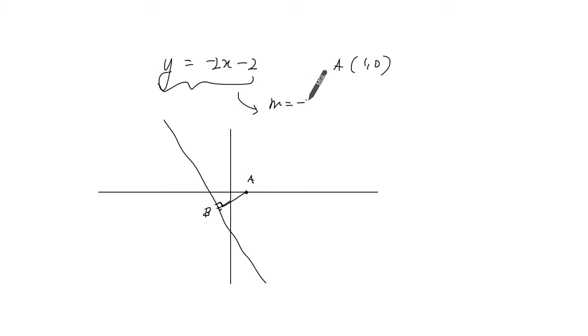So this has a slope of negative 2. Perpendicular slope, we know it's negative reciprocal, so if you take the negative of this, it's positive 2, reciprocal of that is half.